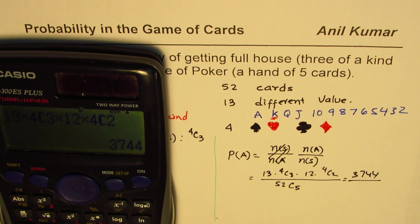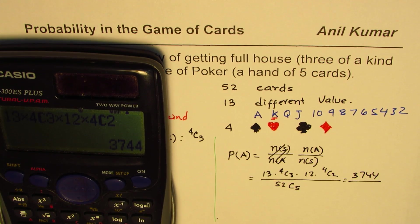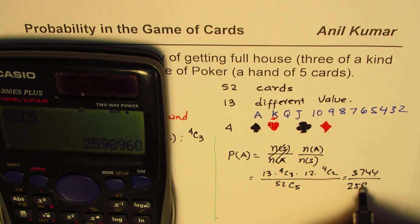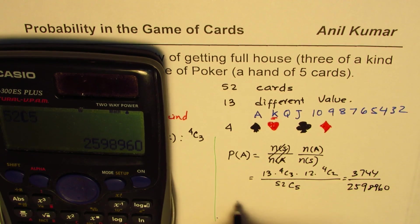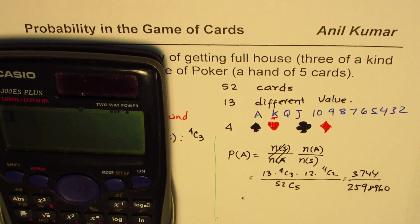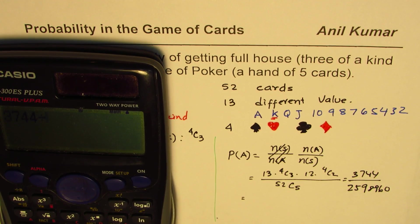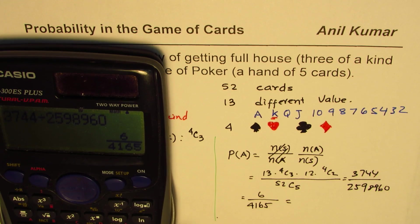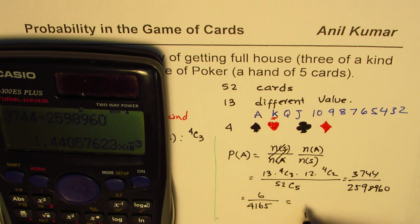And we'll divide by, let's do it in two steps now. So now let's calculate 52C5. We could have done it in one step anyway: 2,598,960. So we'll divide 3744 by 2,598,960.